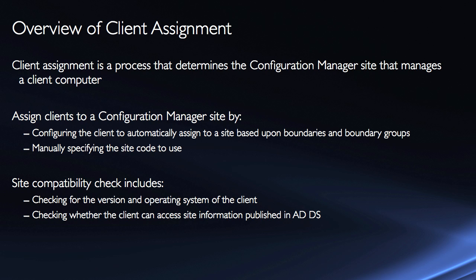You can configure the client to automatically assign to a site based upon boundaries and boundary groups, or you can manually assign it. Automatic site assignment works by publishing certain information into Active Directory. When you install the Configuration Manager client software, if it doesn't have a manual assignment specified during installation, when it starts up it has to go through this automatic detection process and query Active Directory to determine where its assignment should be.